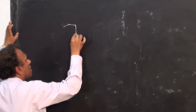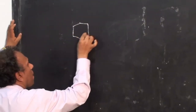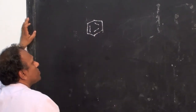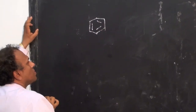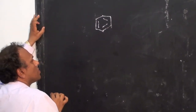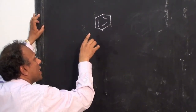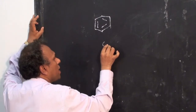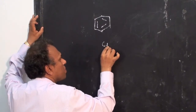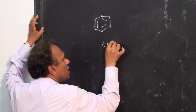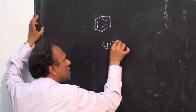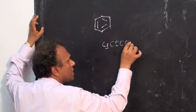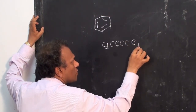Consider benzene. In the case of benzene, the SMILES format can represent it as C1, C, C, C, C, C, C1.